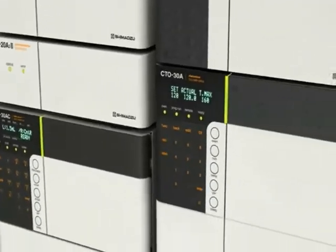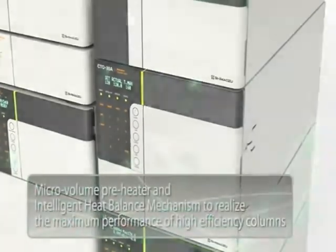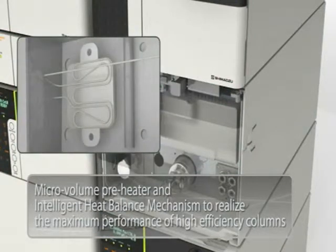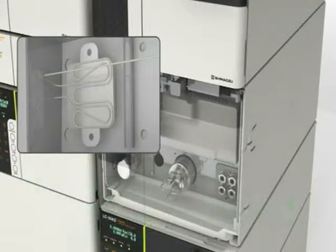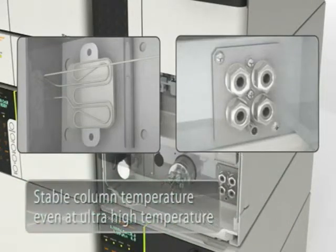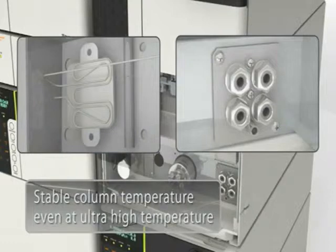The newly adopted micro-volume preheater and heat balance mechanism in the Nexera column oven allow the column to perform at its highest efficiency and to provide excellent separation run after run. This ensures uniform column temperature control, even in ultra-high temperature conditions. The new preheater, heat balance mechanism, and post-column cooler bring reliability in high-temperature analysis.